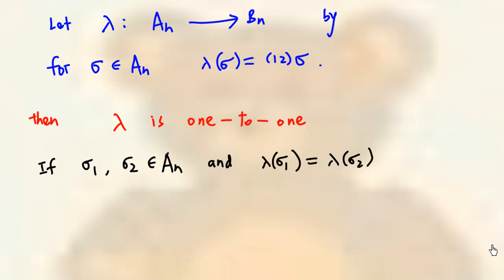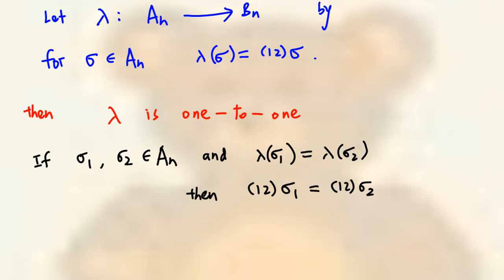Now, we will show that this lambda is 1 to 1. If sigma 1 and sigma 2 are even permutations, and suppose the image of sigma 1 and sigma 2 are equal. That means, (1 2) times sigma 1 is equal to (1 2) times sigma 2.